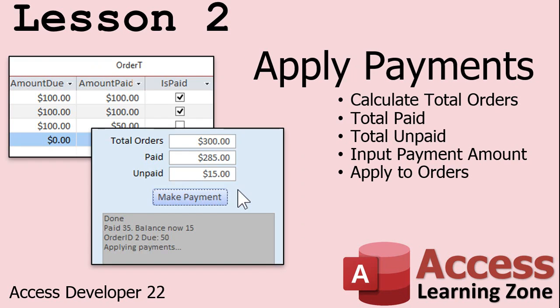In lesson two, we're going to learn how to apply payments to orders. We're going to make an order table with an amount due, an amount that's been paid, and whether that order is paid or not — so we've got a balance on each order. A user places three orders worth $100 each, so he owes you $300. He comes in and makes a $250 payment — not quite paying all of them. So we use a record set to loop through the orders from oldest to newest, applying the amount due to the first, the second, and if there's any left over, the third.